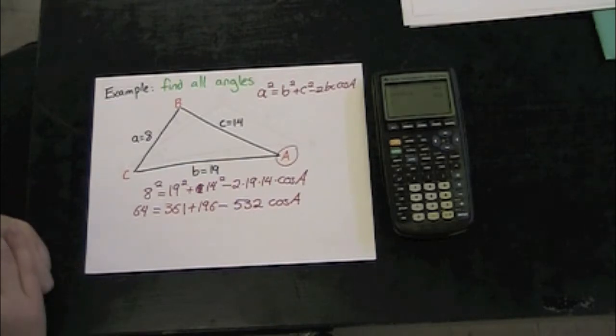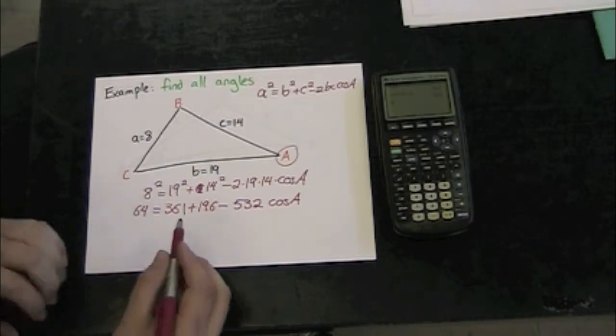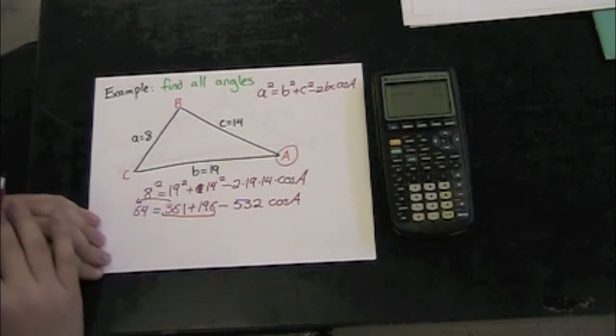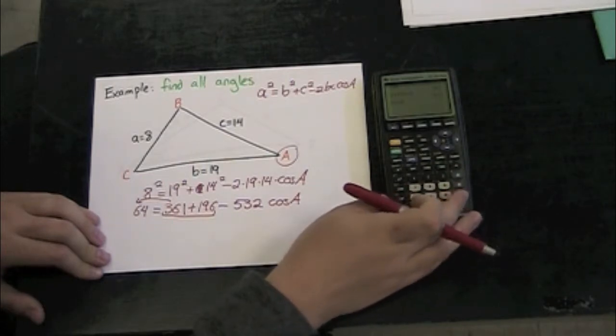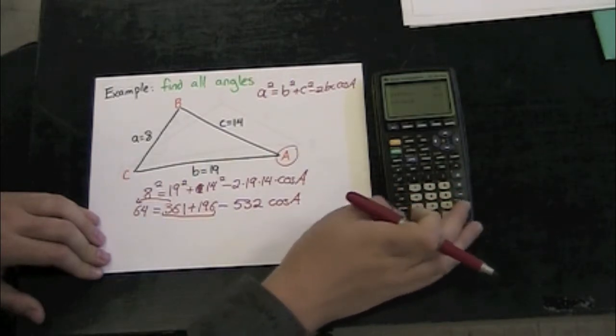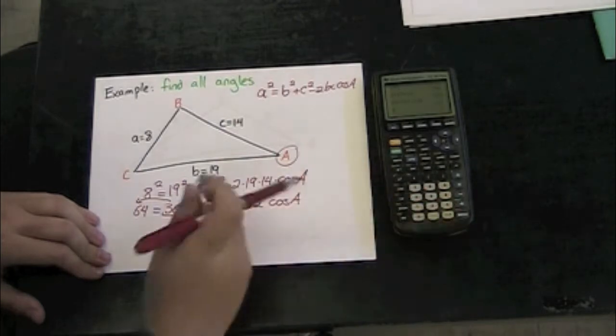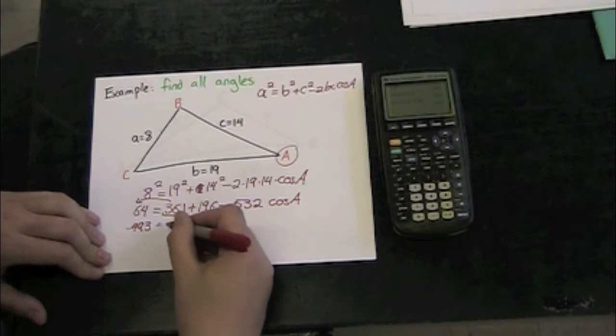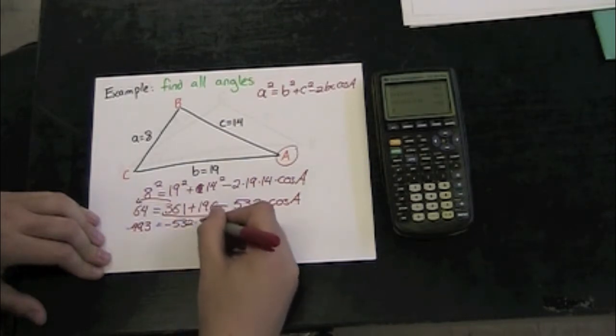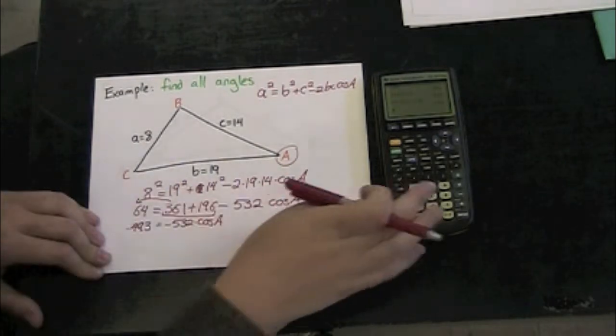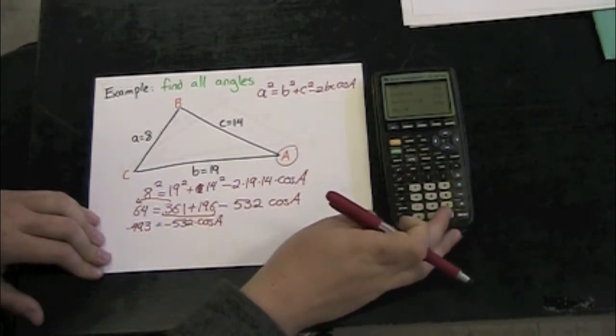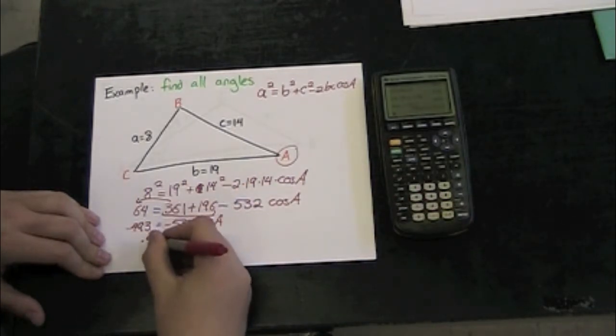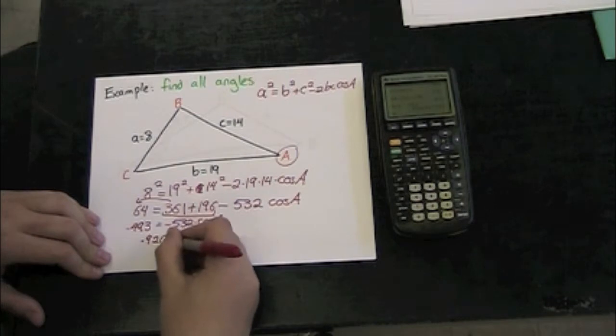If I begin to add these things together, I'm going to move these two terms over to my left side by subtraction. So I've got 64 - 361 - 196 = -493 = -532 times cosine of angle A. Divide both sides by -532 and I get cosine of A = 0.9267.